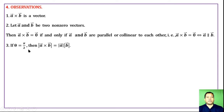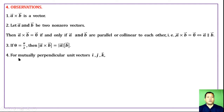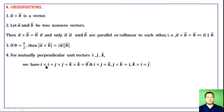If theta is pi by 2, then the magnitude of a cross b equals the product of the magnitudes of a and b. For mutually perpendicular unit vectors î, ĵ, k̂: î cross î = ĵ cross ĵ = k̂ cross k̂ = zero vector. And î cross ĵ = k̂, ĵ cross k̂ = î, k̂ cross î = ĵ. These follow a cyclic alphabetical order.